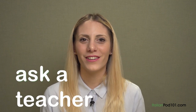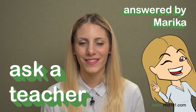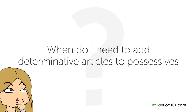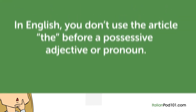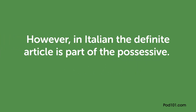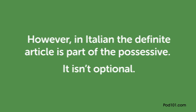Hi everybody, Marika here. Welcome to Ask a Teacher. The question for this lesson is: when do I need to add determinative articles to possessives? In English, you don't use the article 'the' before a possessive adjective or pronoun. However, in Italian, the definite article is part of the possessive — it isn't optional. Also, possessives must agree in number and gender with the noun of the owned thing, not with the noun indicating the owner.